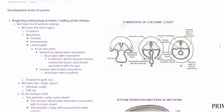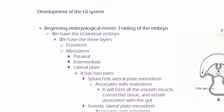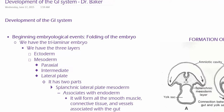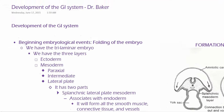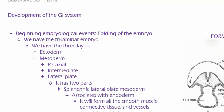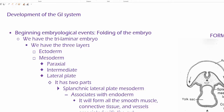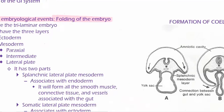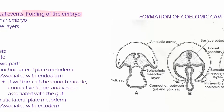We're talking about the development of the GI system. We're going to begin with early embryological events — specifically embryo folding. We're going to have cranial, caudal, and lateral folding.